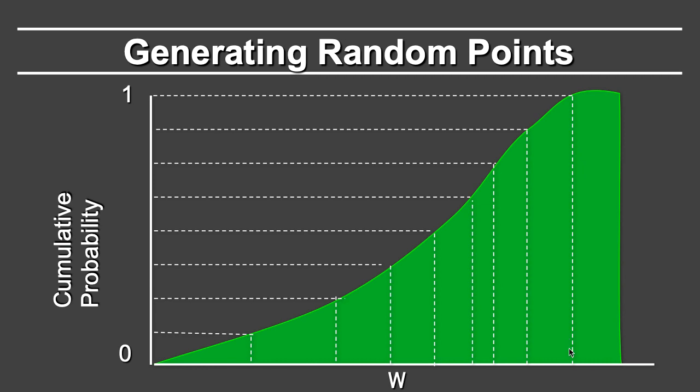This is the inversion part. You come down here, and this is the corresponding sample value. So if you look at the distribution of samples in the original domain, you can see that they are clearly not uniform.